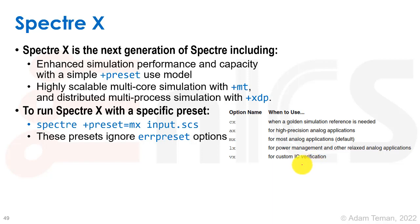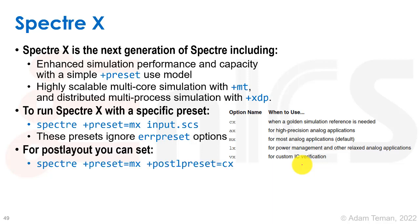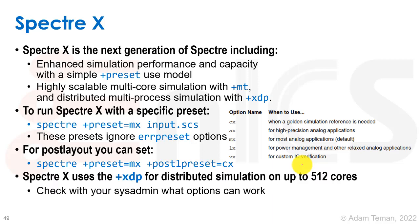The Spectre-X preset options ignore the air preset option because they have their own Spectre-X preset type. For post layout, you do Spectre +preset=MX +postL_preset equals whatever you want. The XDP option can be distributed on up to 512 cores, so you have to set that up with your IT.